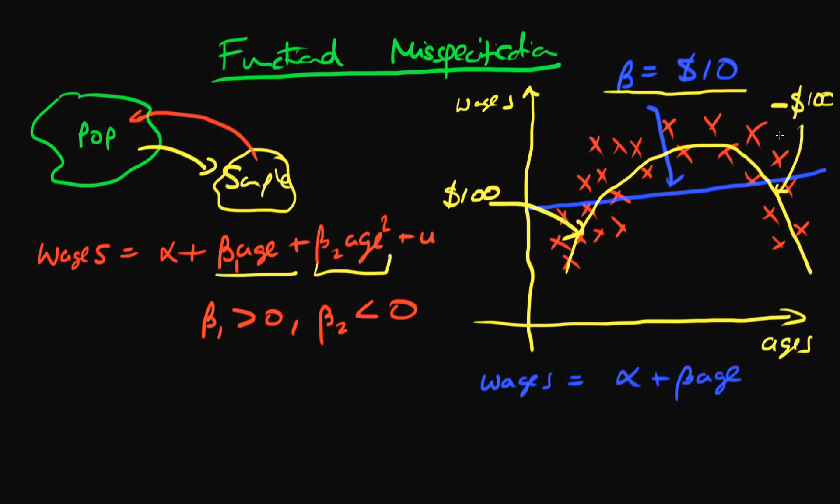So I hope that this has illustrated how functional misspecification, in this case omission of age squared from the regression, because functional misspecification is another way to think about a kind of omitted variable bias, how this has led us to have biased estimates of the effect of age on wages in the population. Because we didn't specify a model correctly, we thought that there was a constant return to age in terms of wages, when in fact almost certainly there is some sort of non-linear return of age to wages.